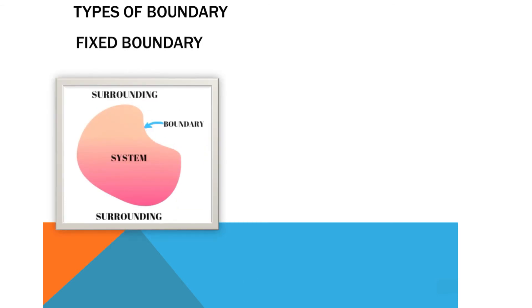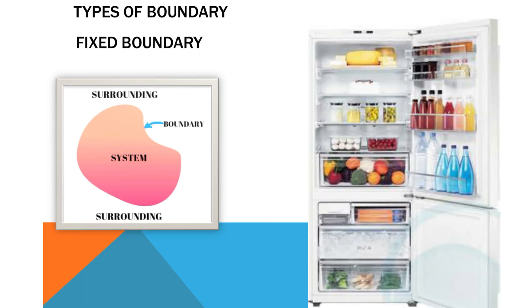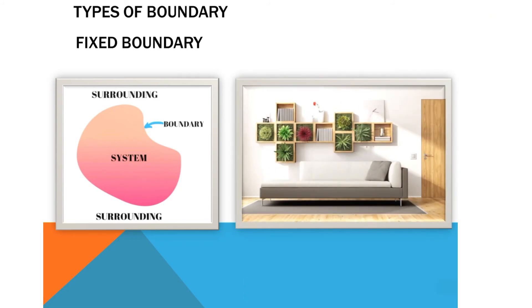There are three types of boundary: fixed boundary, movable boundary, and imaginary boundary. A fixed boundary means the boundary does not change with respect to any external parameter. Examples include the body of a refrigerator, a wall, an engine body, an IC engine casing, and a pressure vessel.